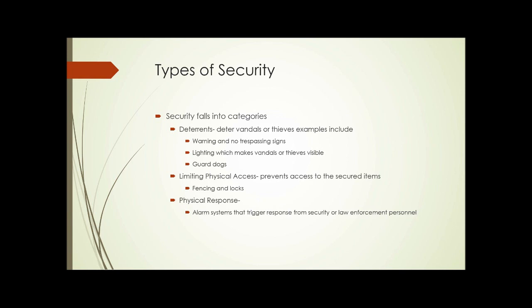So what are the types of security that we can employ? There are categories of security, starting with deterrence. As the name implies, these things deter vandals or thieves. Some examples are warning signs, no trespassing signs, lighting — which makes vandals and thieves visible — and guard dogs, that sort of thing.